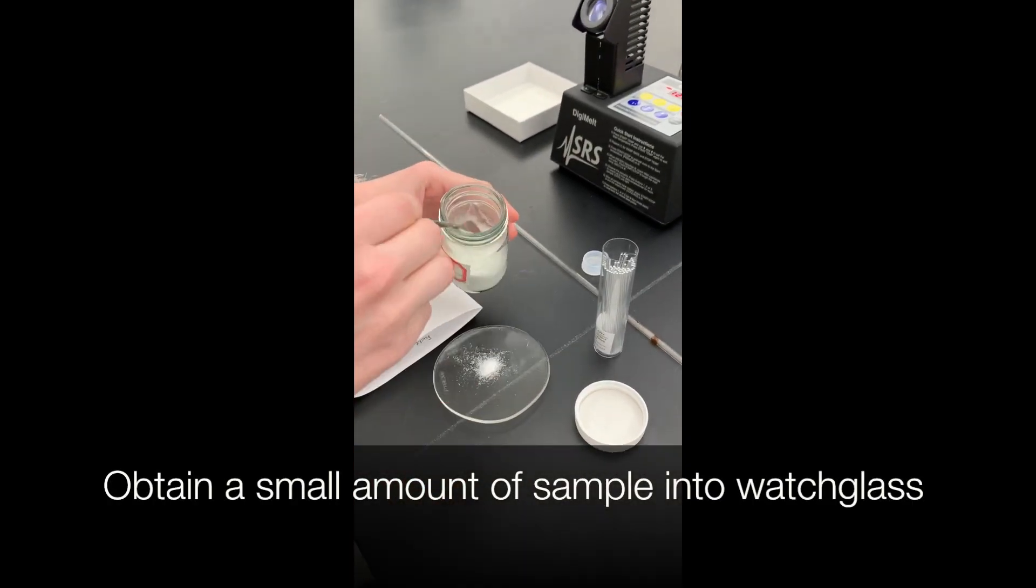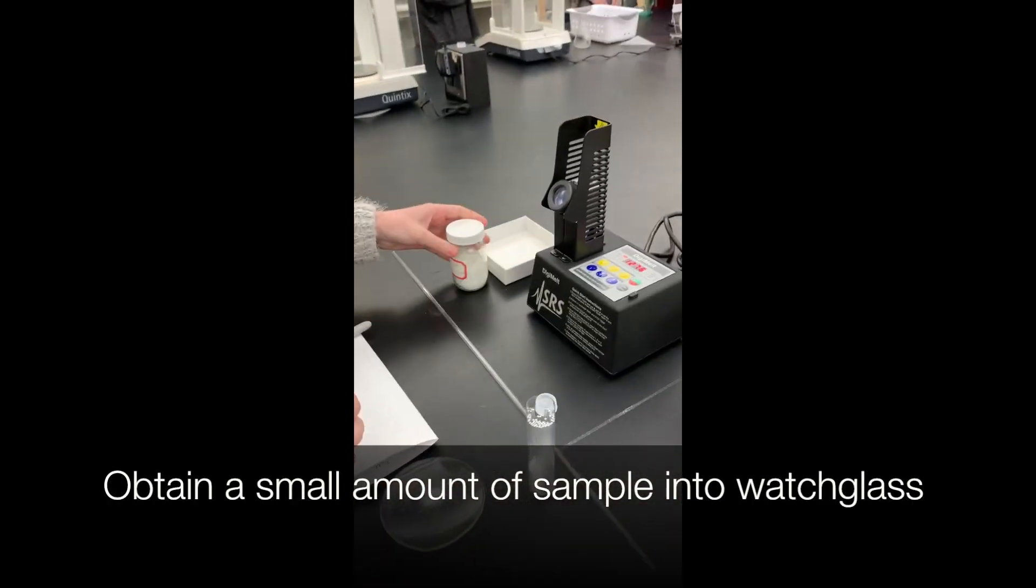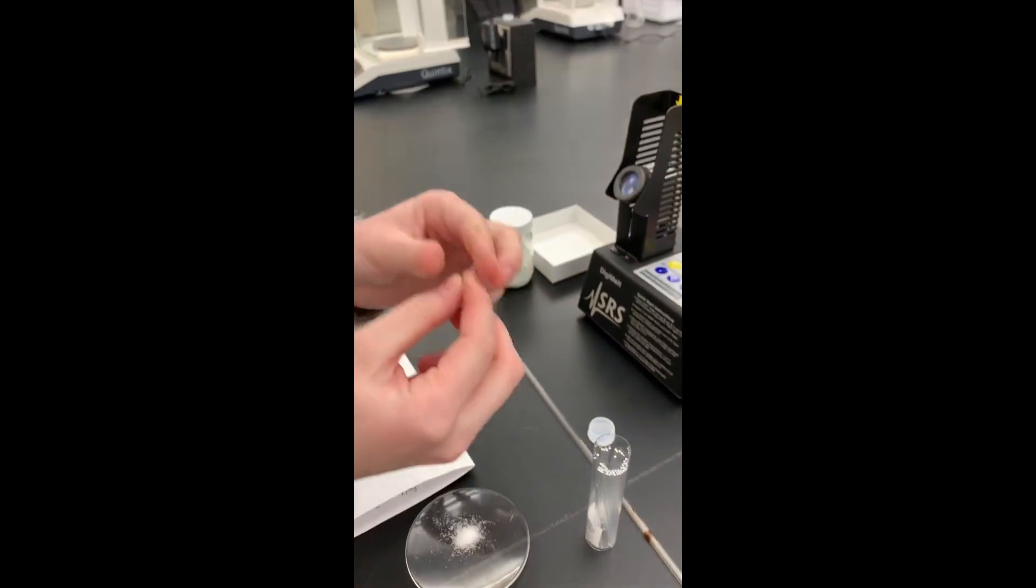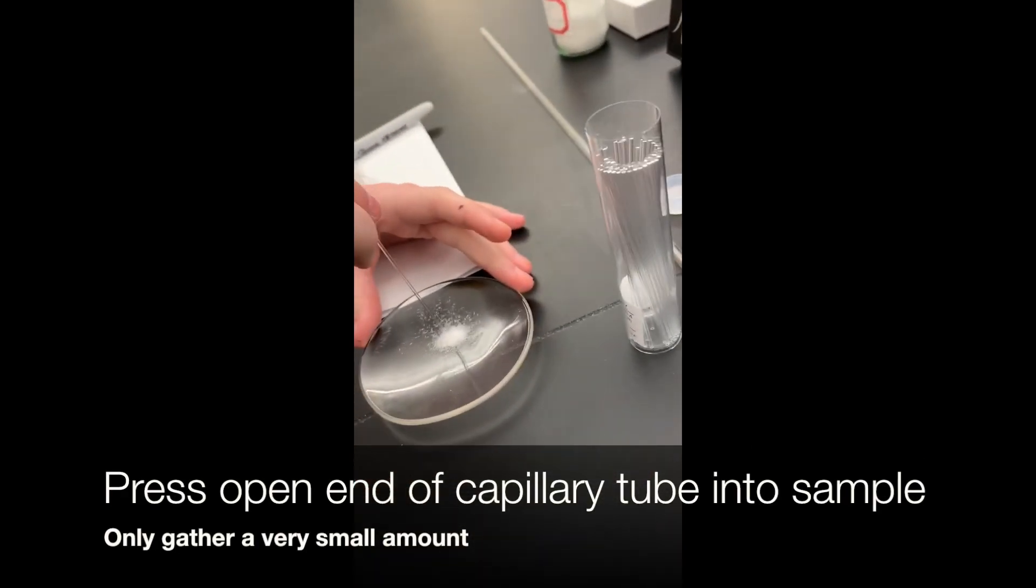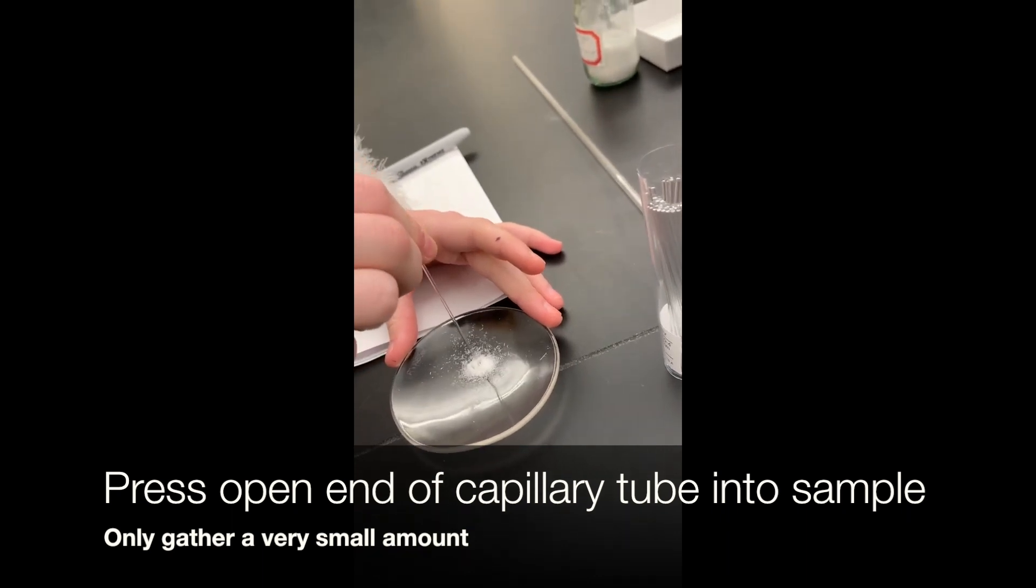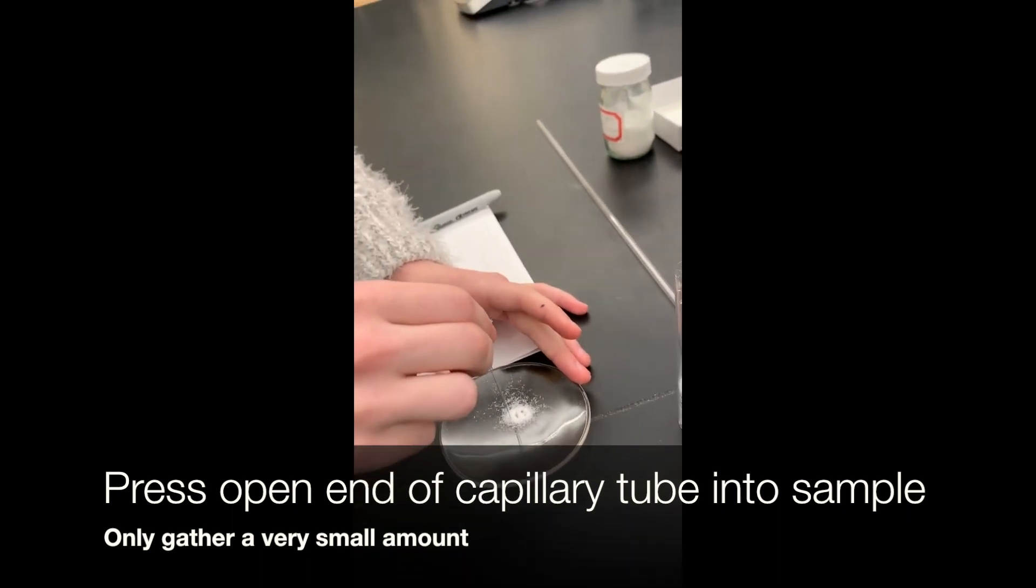Now you can prepare your sample. Place your sample on the watch glass and obtain a capillary tube, which is a small glass tube with one closed end and one open end. Push the open end of the capillary tube into the pile of sample one time so as not to gather too much sample.